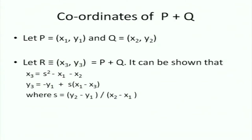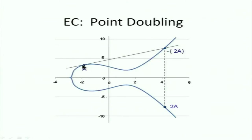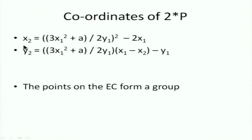The doubling of a point: I want to add A to itself. Adding A to B involved connecting A and B; adding A to itself means there is a tangent at point A. I draw a tangent at A to see where it hits the curve — that gives −2A, and taking the mirror image gives 2A. So the three operations important in cryptography are point negation, point addition, and point doubling, with the coordinates given by specific formulas where x₁, y₁ are elements of the field.